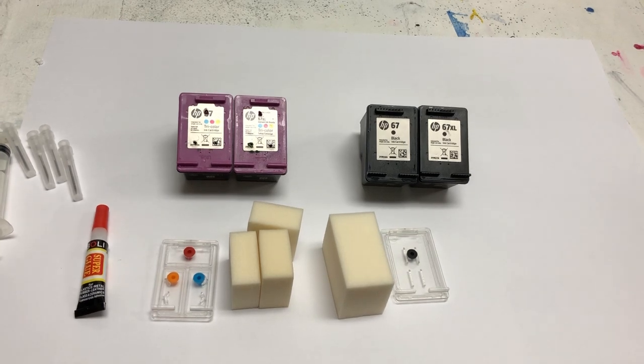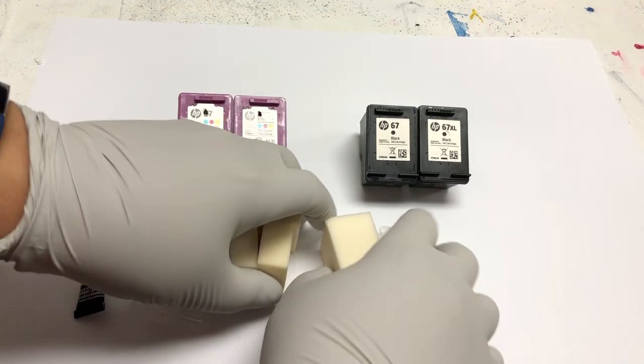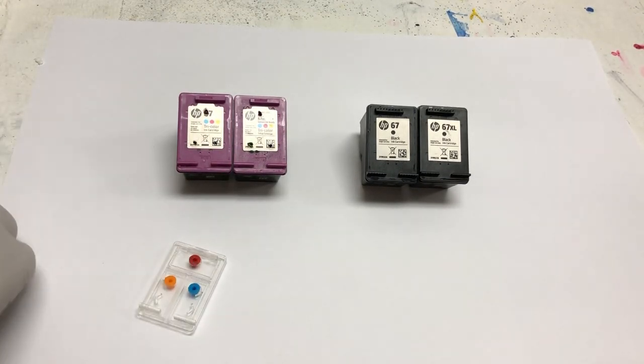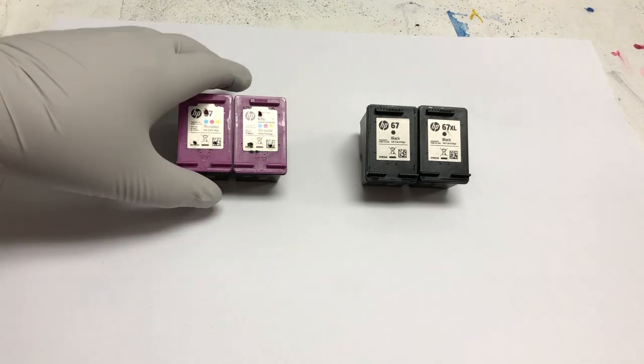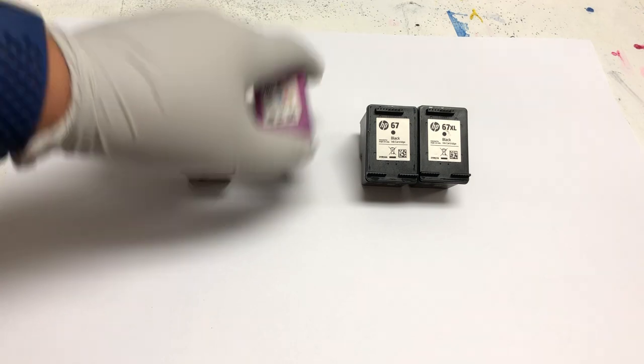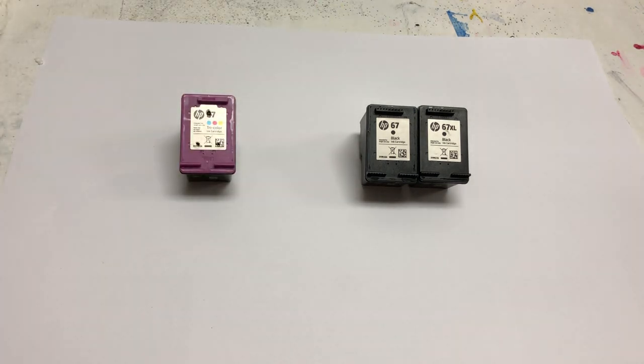The superglue is for if you want to glue the cover airtight, which is optional. Actually, I suggest you not to, because if you do not glue it airtight, you can remove the sponge later and use the sponge at another set of cartridges.